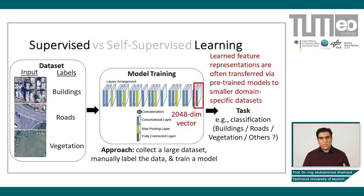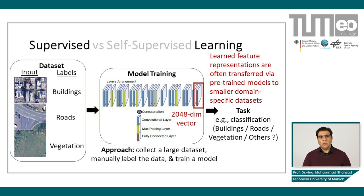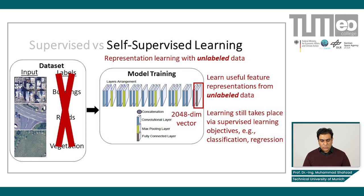This is very good for transfer learning, where we take learned feature representations and apply them to smaller domain-specific tasks such as classification or object detection. For example, we could train a model for classification and use those feature vectors to train something for segmentation or object detection as well. In self-supervised learning, the idea is that we want to make these feature representations more robust, but without using labeled data. So in self-supervised learning, we do not use labels directly — it is essentially representation learning with unlabeled data, though learning still takes place via supervised objectives such as classification or regression.